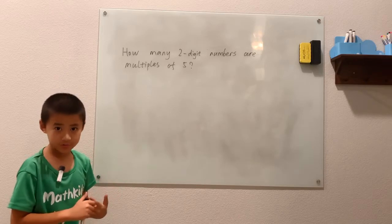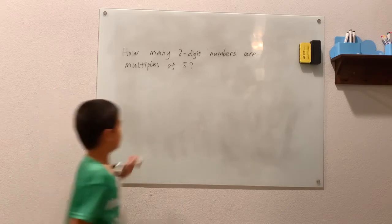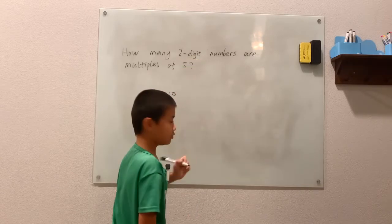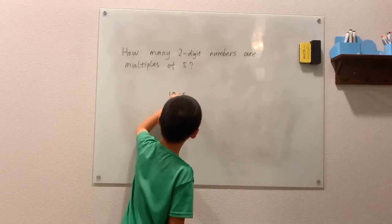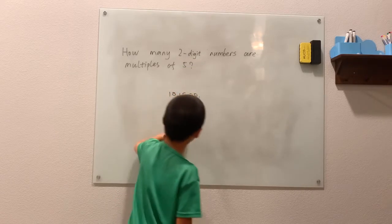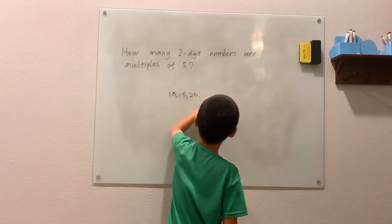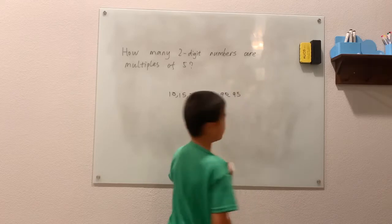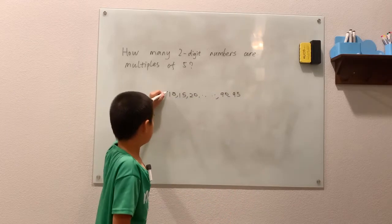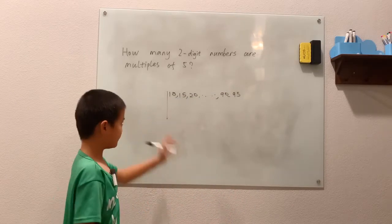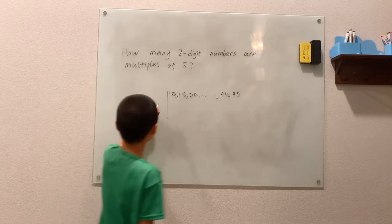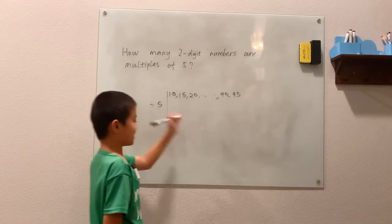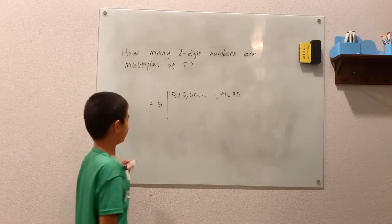First, you can just use counting as in lists — just write a list starting from 10, because we are using two-digit numbers: 10, 15, 20, all the way up to 90 and 95. You can divide by 5 to get all the numbers counting by 1. I'm just going to write 'divide by 5' here so you can see how we're changing the list.